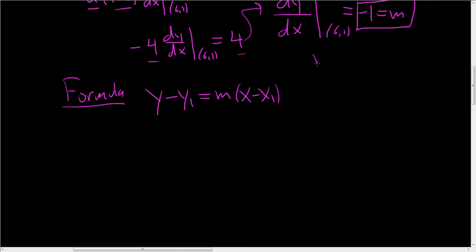And in our case, m is negative 1. And our point was 6 comma 1. So this is your x1, this is your y1. Then you just plug everything in.